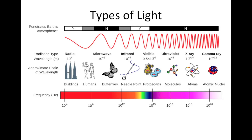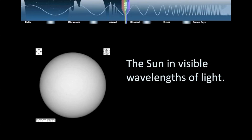The only types of light that get all the way through Earth's atmosphere from space are visible light and most of the radio part of the spectrum. Some infrared gets through and very small portions of the ultraviolet light spectrum get through, but most other types of light are blocked by the Earth's atmosphere. Some of the pictures I'm going to show you are taken from the surface of the Earth, and some are made by telescopes in space, depending on whether or not the light can get through the atmosphere.